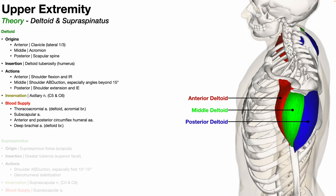The fact that the different functional regions — anterior, middle, and posterior — originate at different points relative to the same insertion point confers slightly different functions to the three regions. The anterior portion of the deltoid primarily functions in shoulder flexion and internal rotation. While the deltoid as a whole is associated with shoulder abduction, the anterior deltoid mainly functions in shoulder flexion and shoulder internal rotation.